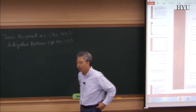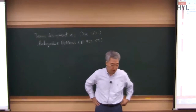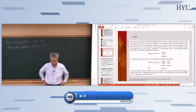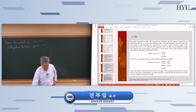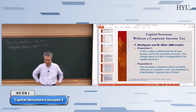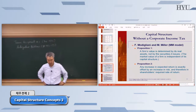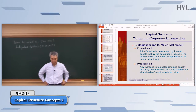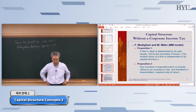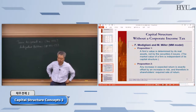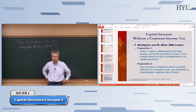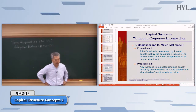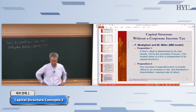MM theory, MM model, Modigliani-Miller theory on capital structure. If you remember, they have a couple of propositions. The first proposition said the firm's value is determined by its real assets, not by the security issues. In other words, the market value of a firm has nothing to do with its capital structure. So according to MM, there is no such thing as optimal capital structure — the debt-equity ratio doesn't really matter. That's the idea of proposition one.